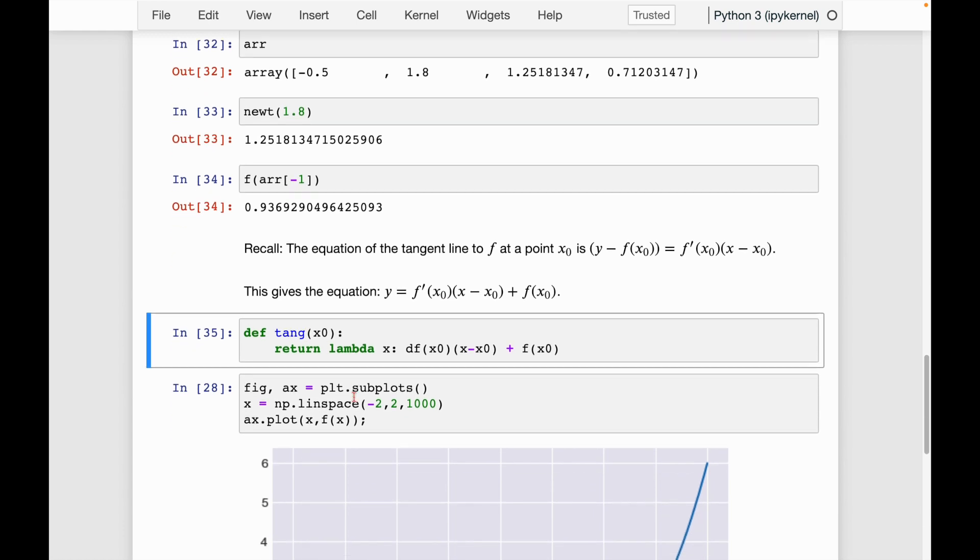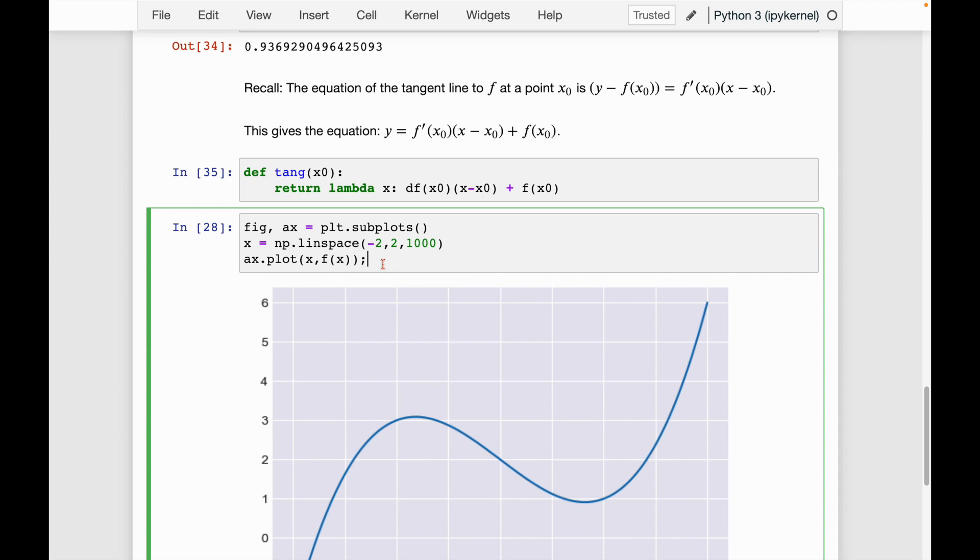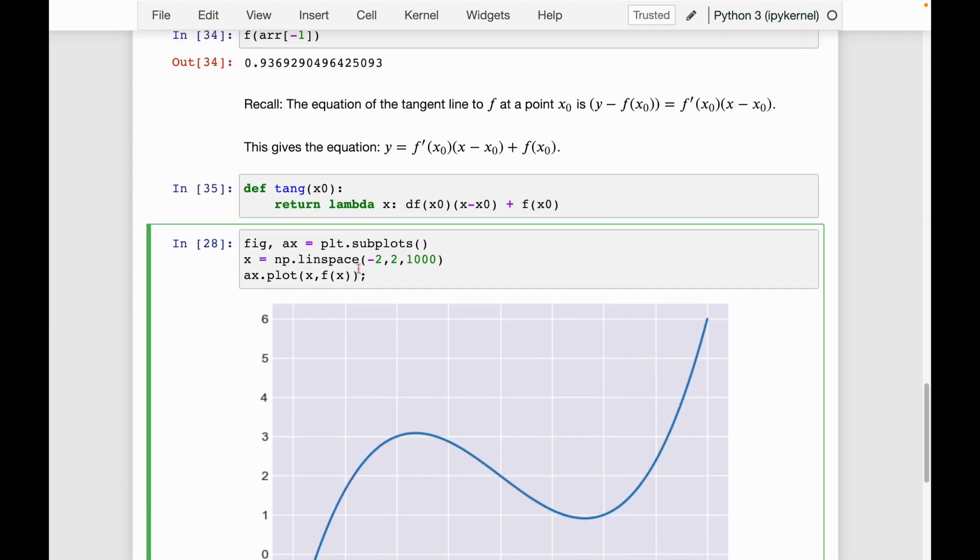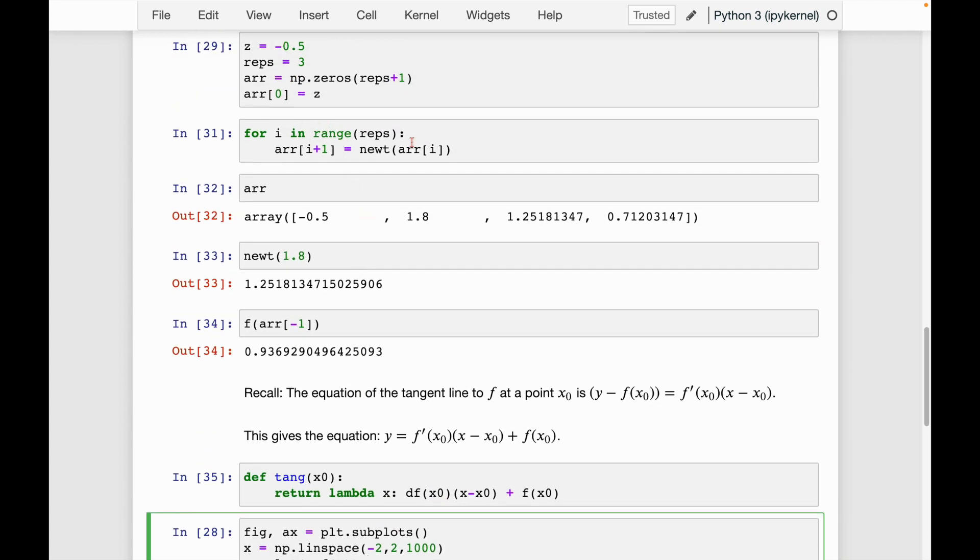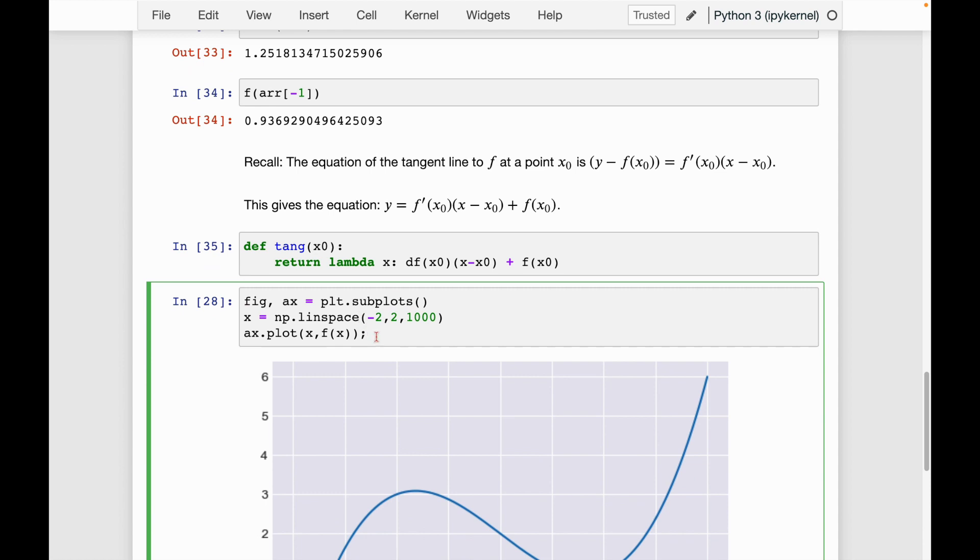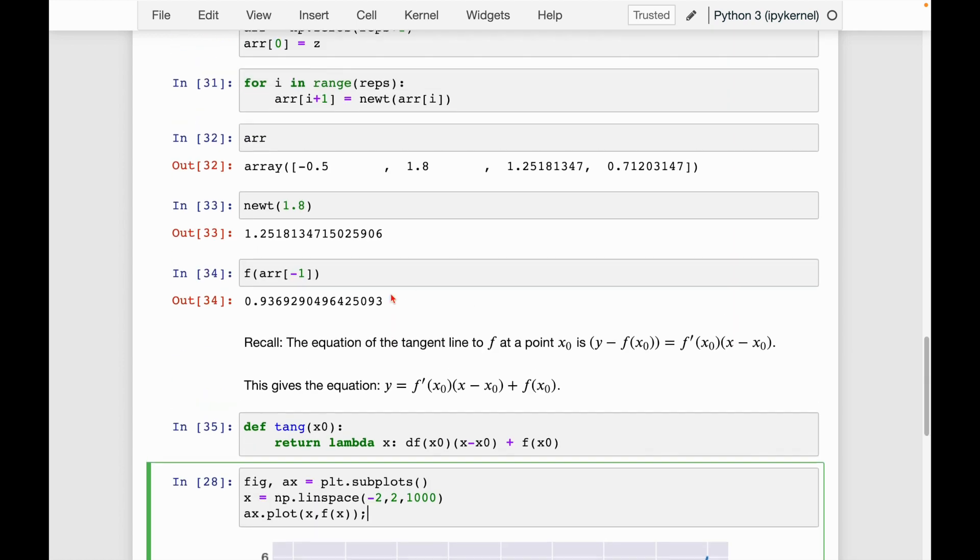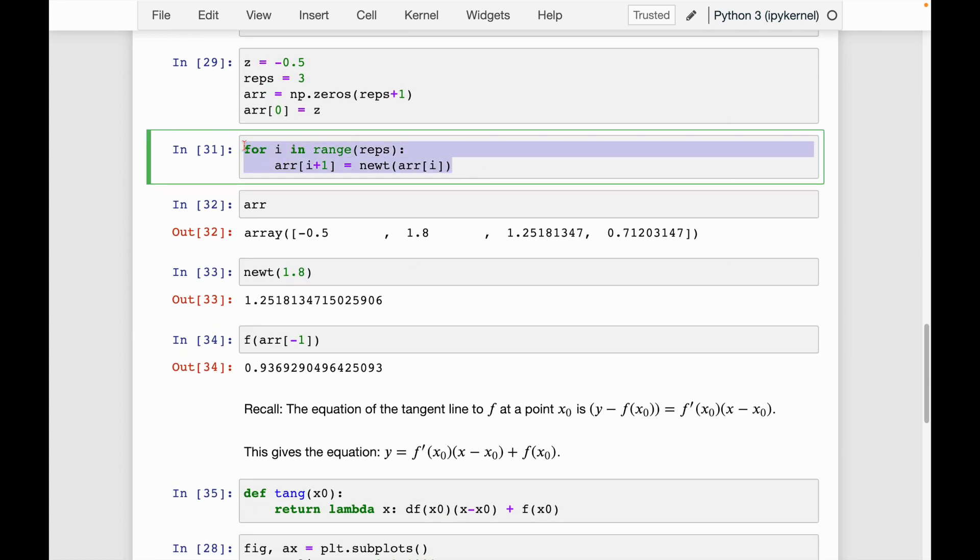So this is the function that gives us the line tangent. And now what we want to do is plot it. So I'm going to go to our plot here. Actually, what I want to do instead is where are, here's our for loops, so for our repetitions. So what I'm going to do is I'm going to copy-paste this code further down.